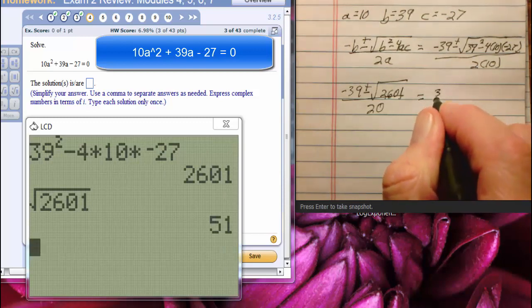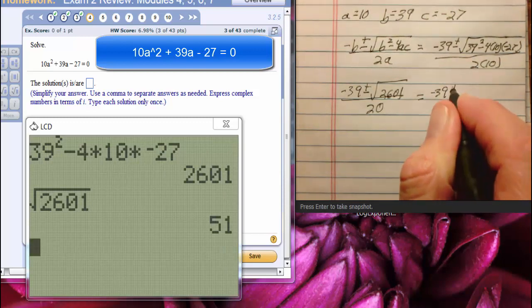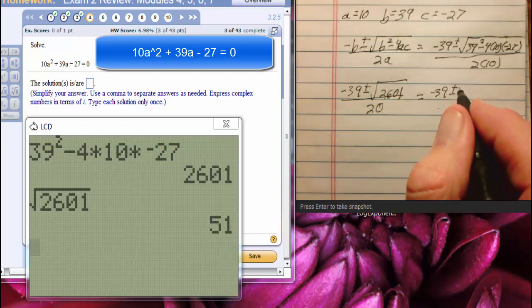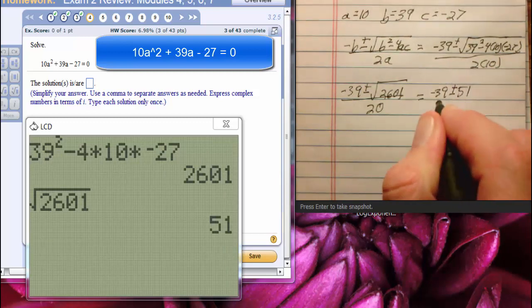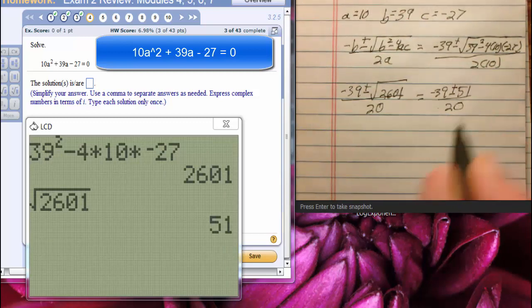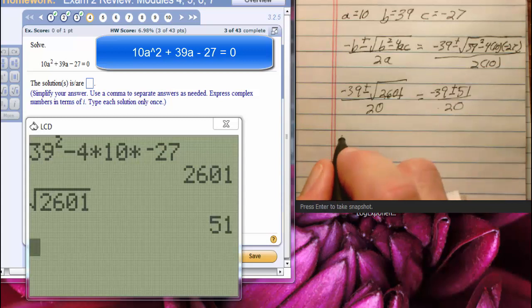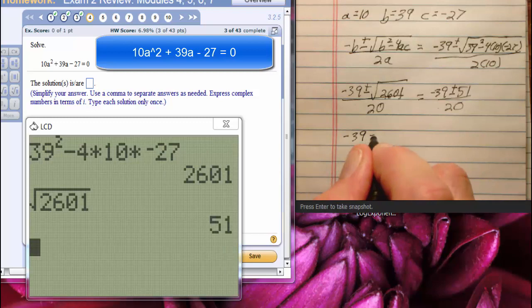So we're going to have negative 39 plus or minus 51 over 20. One of our solutions is going to be negative 39 minus 51 over 20.